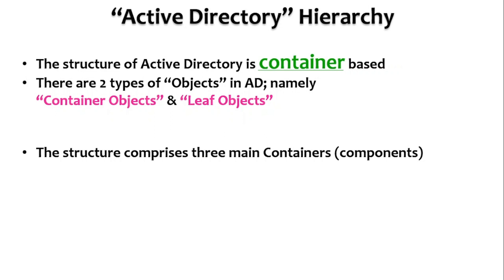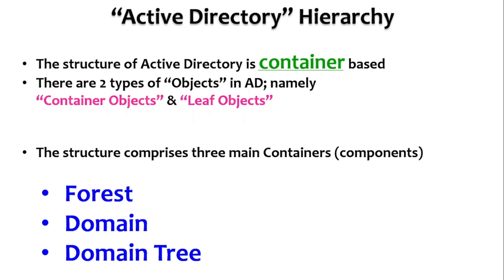The hierarchy comprises three main components or containers: forest, domain, and domain tree. These are the three major containers in the world of active directory. Let's see them one by one.